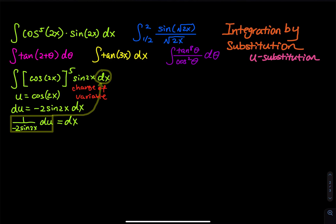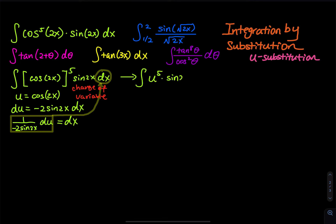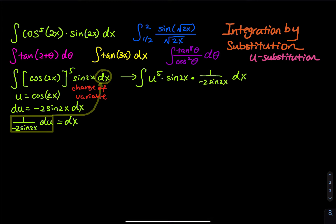The next step is rewriting the integral. It becomes the integral of u to the fifth — because everything inside the square bracket equals u — times sine of 2x, multiplied by dx, which is 1 divided by negative 2 sine of 2x, du. Now the sine of 2x cancels, and the integral simplifies.